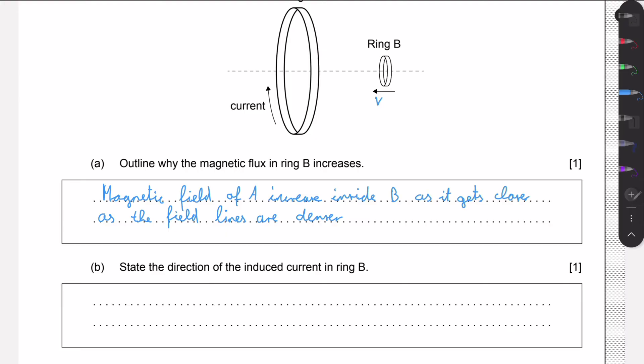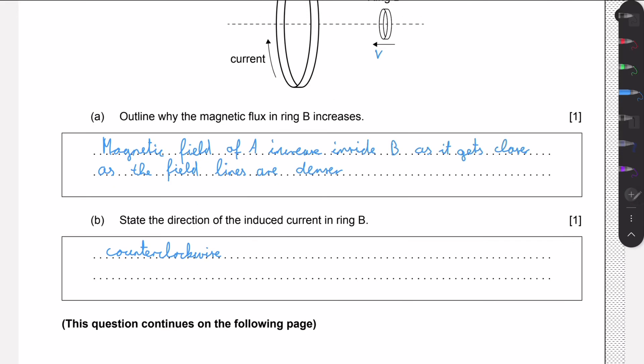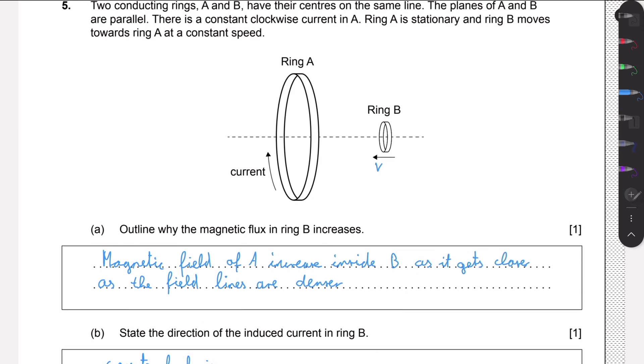Then we need to state the direction of the induced current in the ring. Well, one could just immediately say counterclockwise. If we remember Lenz's law, then we know that these two have to be opposite and current A is clockwise.